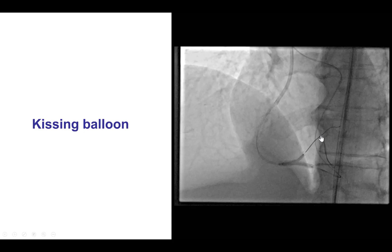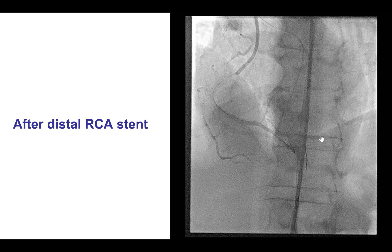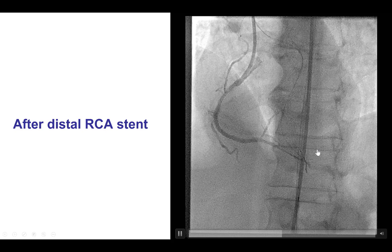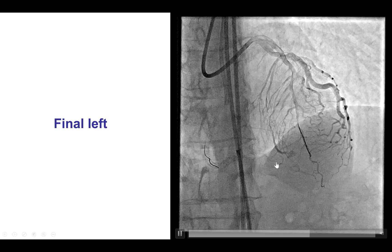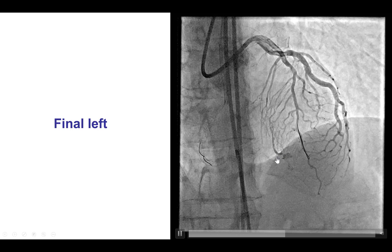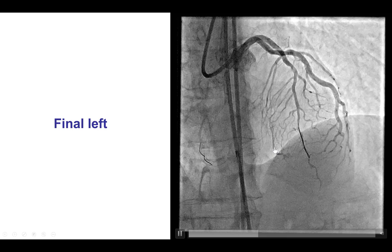It is important not to lose a major branch like this during CTO recanalization. After the kissing balloon inflation and placing an additional stent distally, we had a nice final result with TIMI flow in the right coronary artery. Final injection of the left coronary demonstrated some dissection and perforation of the first septal that we tried to cross with the microcatheter without success, but the other two septals are okay. This illustrates that if there's a lot of resistance to crossing a septal, it may be best to switch to a different septal rather than persist.